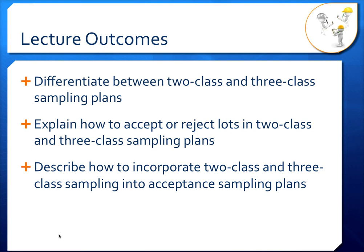In this video, we'll differentiate between what's called two-class and three-class sampling plans, and we'll look at how to accept or reject lots of food in those types of sampling plans. We'll also talk about how you incorporate two-class and three-class sampling plans into the acceptance sampling plans we've already learned.